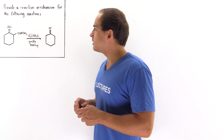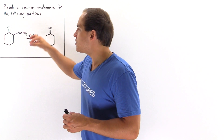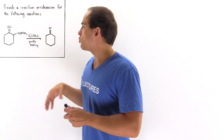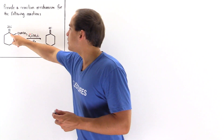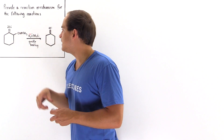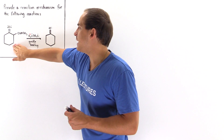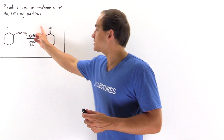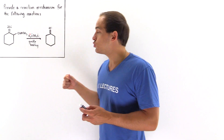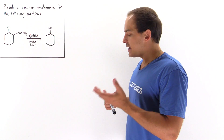The starting material is a beta-keto ester. On the beta position of this molecule we have our ester, or said another way, on the beta position we have a ketone. We are basically hydrolyzing our beta-keto ester under acidic conditions, and then we're gently heating the product to produce our final product - our ketone.